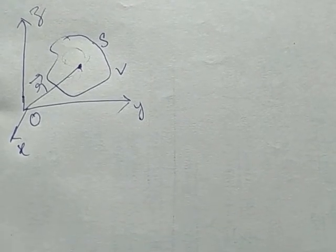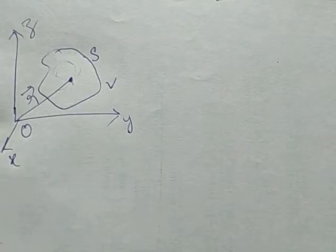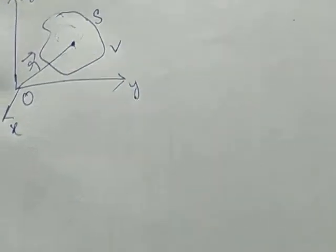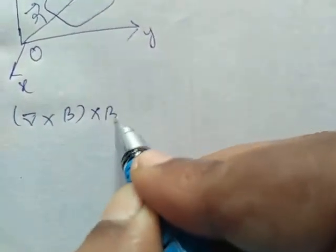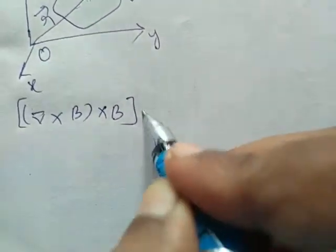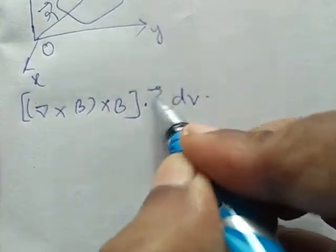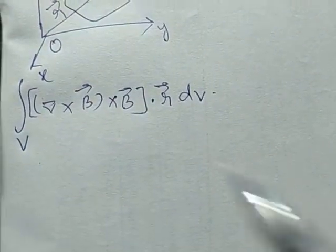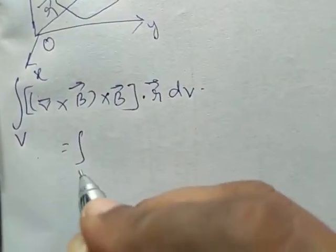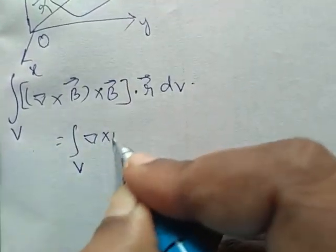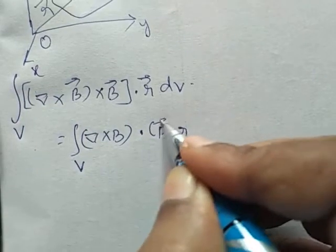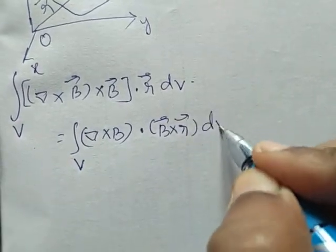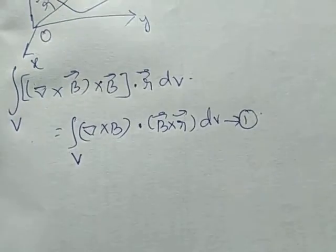Now we are considering the integral over volume V of (del × B) × B · R dV. This we can write as the integral over V of (del × B) · (B × del). We take this as equation 1.